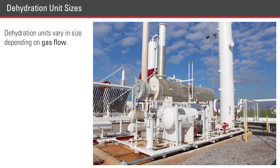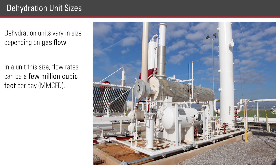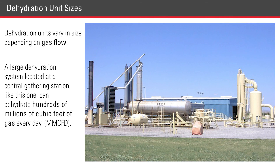Dehydration units vary in size depending on gas flow. In a unit this size, the flow rate can be a few million cubic feet per day. A large dehydration system located at a central gathering station like this one can dehydrate hundreds of millions of cubic feet of gas every day.